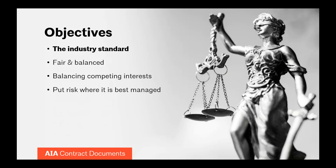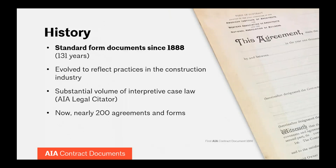The AIA documents have been around since 1888. We consider them to be the industry standard. One of the benefits is that they have evolved as changes in practice have evolved and as the law has evolved. Part of what we do when we update the documents is look at any changes in practice and the law that may have occurred since the document was last updated. We now have nearly 200 agreements and forms that we publish.